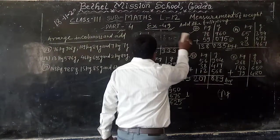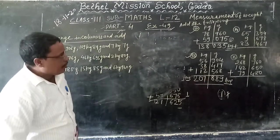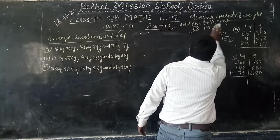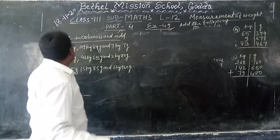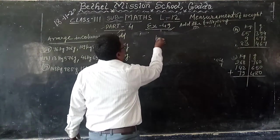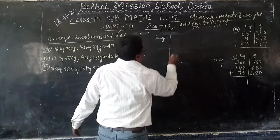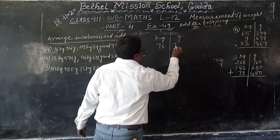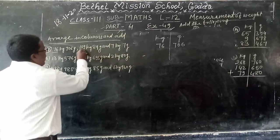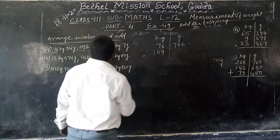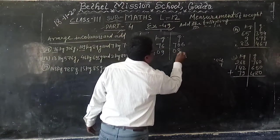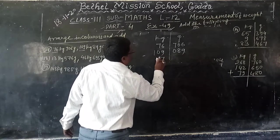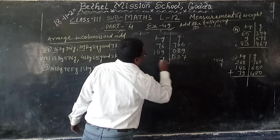This you can do, question number 17, arrange in column and add. 71 kg, 76 kg, 706 grams, 109, 89 gram, and 7 gram. Like this.